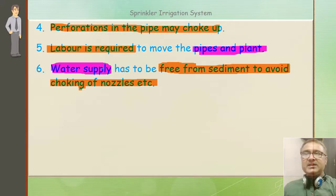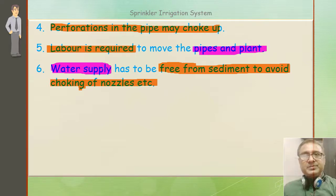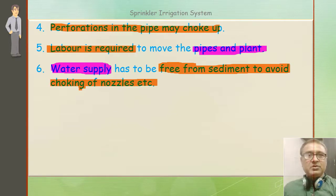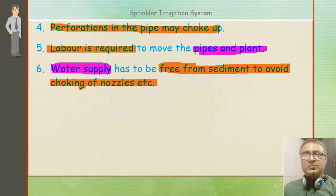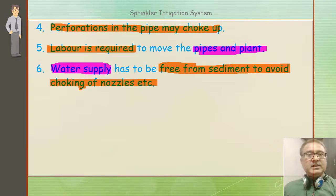Another limitation: perforations in the pipe — अगर poor quality water use किया, उसमें impurities हैं तो nozzles में जो perforations हैं वो choke या block हो सकती हैं। Labor is required to move the pipes and plant. Water supply has to be free from sediment to avoid choking of nozzles — इसको remove करने के लिए पानी में sediments या impurities नहीं होनी चाहिए।